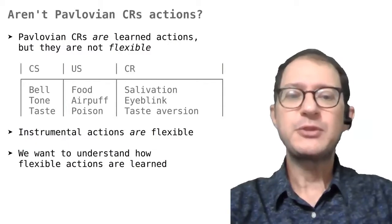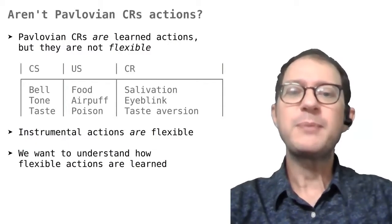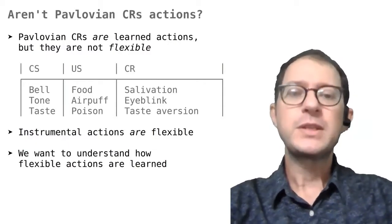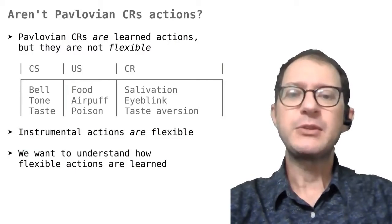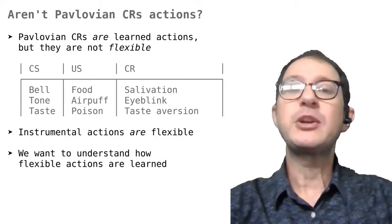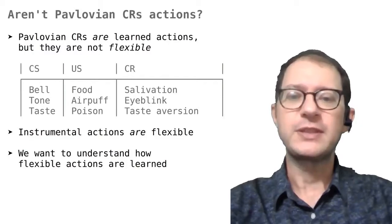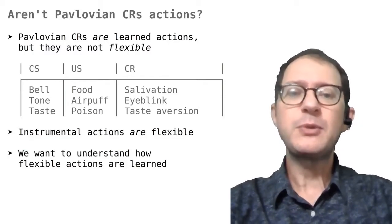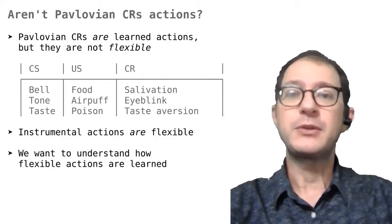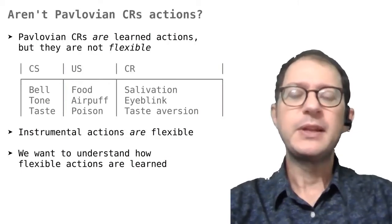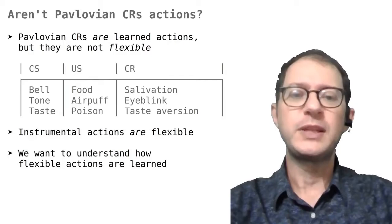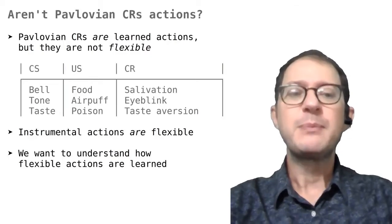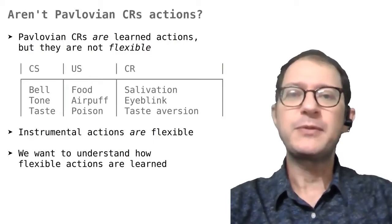Instead, we know that in instrumental conditioning we can train many different behaviors. We saw in our first lesson on instrumental conditioning that we still cannot train completely arbitrary actions, but still there is a lot more flexibility than in Pavlovian conditioning. For example, it's almost impossible to train a chicken to move away from food when you are rewarded with food, but you can still train it to do a number of different things.